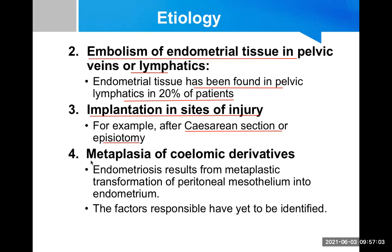Another theory is metaplasia of the coelomic derivative. Coelomic epithelium refers to mesothelial tissue — such as pleural, pericardial, and peritoneal tissue. Endometriosis may result from metaplastic transformation of peritoneal mesothelium into endometrium. However, why this occurs is unknown, so this remains another hypothesis.